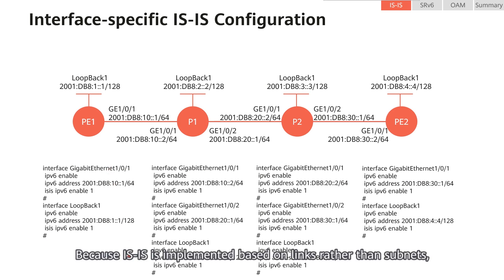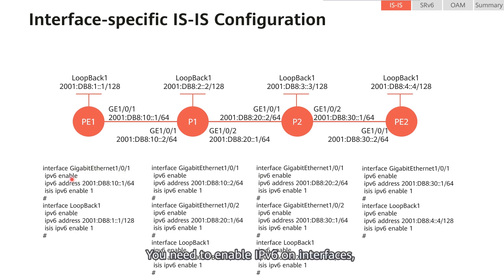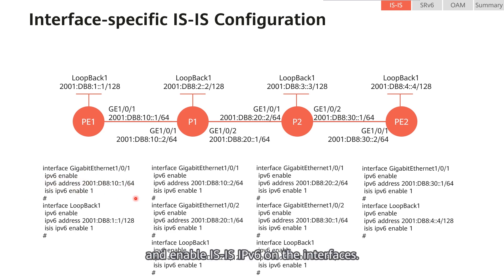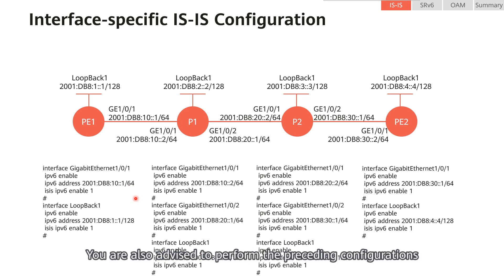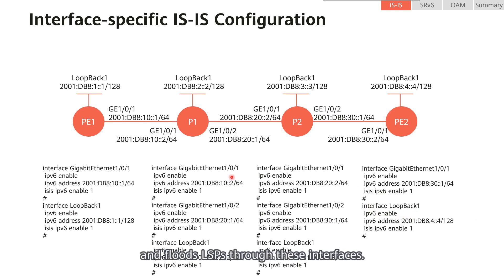Because IS-IS is implemented based on links rather than subnets, it is necessary to configure IS-IS on interfaces. You need to enable IPv6 on interfaces, configure IPv6 addresses, and enable IS-IS IPv6 on interfaces. You are also advised to perform the preceding configurations on the loopback interfaces of P1 and P2. After the configurations are complete, IS-IS establishes neighbor relationships and floods LSPs through these interfaces.